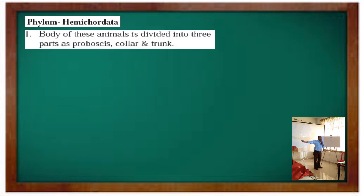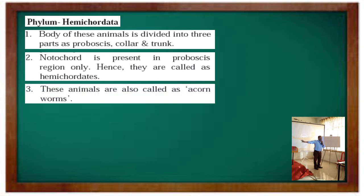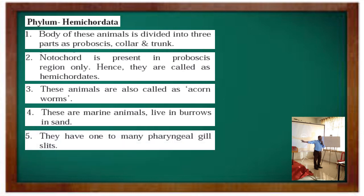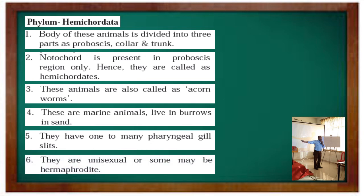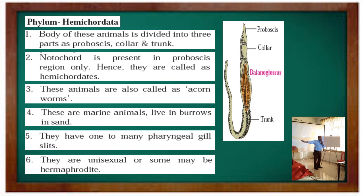Phylum Hemichordata: the body of hemichordates is divided into proboscis, collar, and trunk. A notochord is present in the proboscis region, hence they are called hemichordates. These animals are also called acorn worms. They are marine animals living in burrows in sand. They have one to many pharyngeal slits. They are unisexual or some may be hermaphrodite. Examples of hemichordates include Balanoglossus and Saccoglossus.